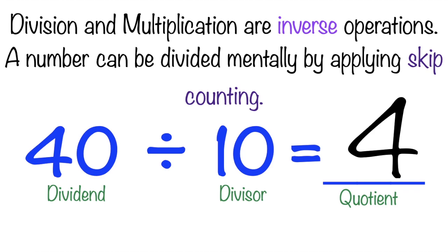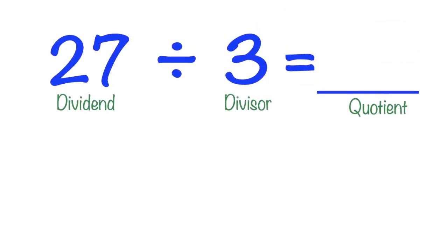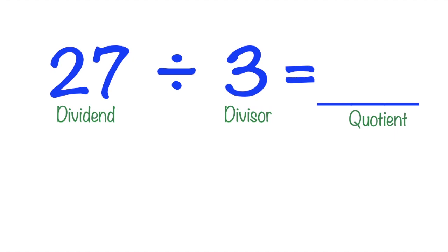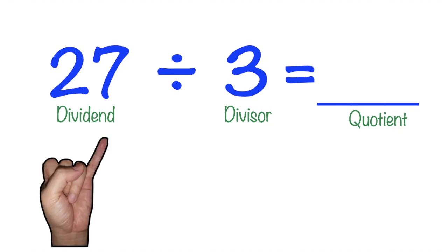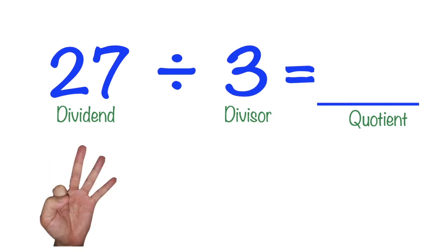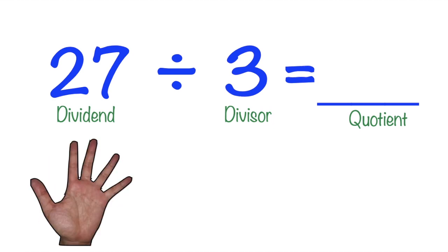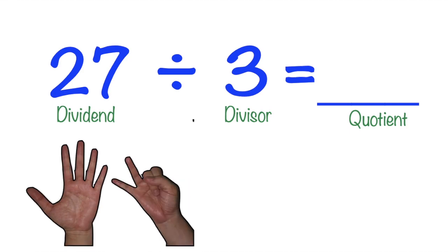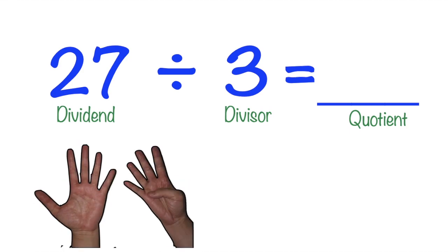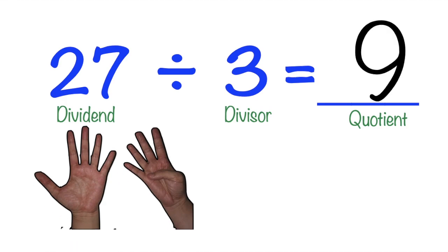Remember, a number can be divided mentally by applying skip counting. Next example: 27 divided by 3 equals blank. Let's skip count by 3 until we reach 27 — 3, 6, 9, 12, 15, 18, 21, 24, 27. The quotient is 9.